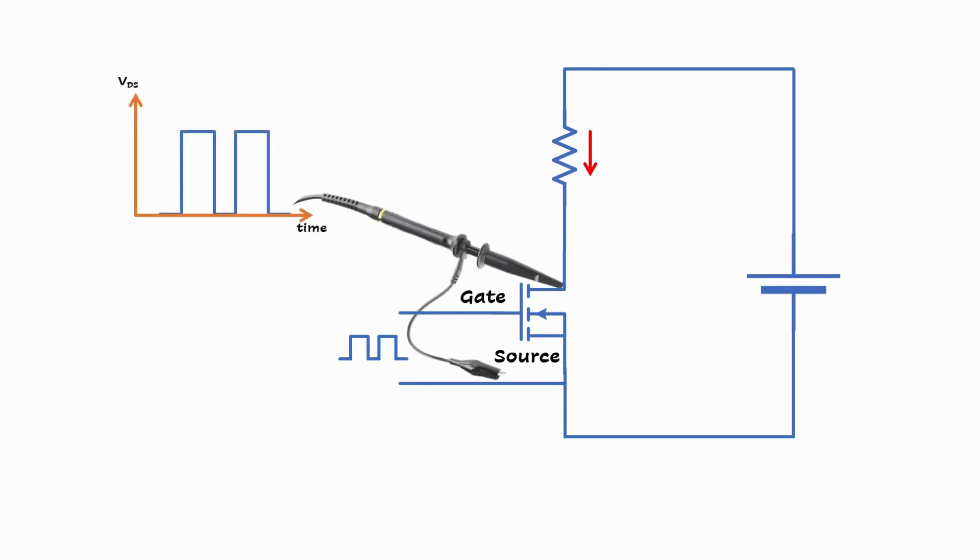Usually when we switch a load on and off in power electronic circuits, we use power switches like MOSFETs. We apply a voltage between the gate and source to switch the MOSFET and that controls the current in the load to be like this, a clean edge with no oscillation.